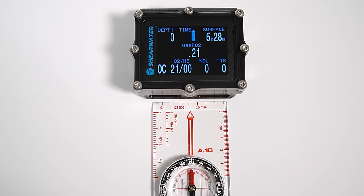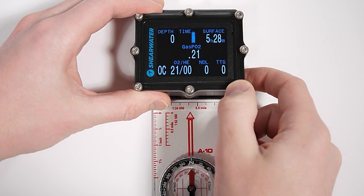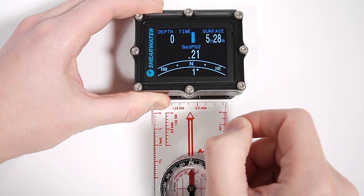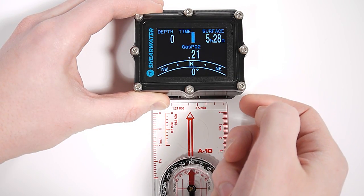Hi, I'm going to demonstrate the compass features of the Shearwater Petrel II dive computer. The compass is accessed by pressing the right button once. It's available in any mode and it appears as this first information screen on the right button.